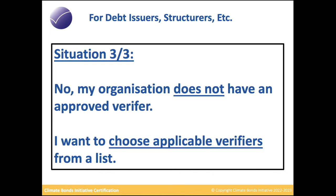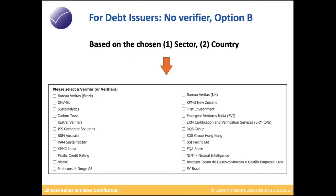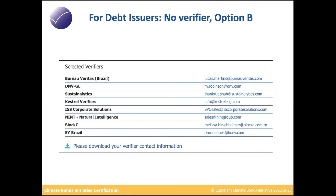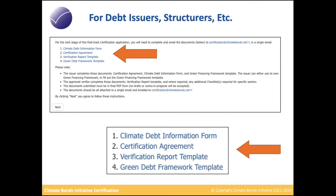In situation three, your organization does not have an approved verifier and you want to choose applicable verifiers from a list. Based on the sector and country — solar and Brazil — you'll be provided with a filtered list of only the verifiers that can do solar in Brazil. You can choose one or several, and you'll be provided with their contact information and email addresses.